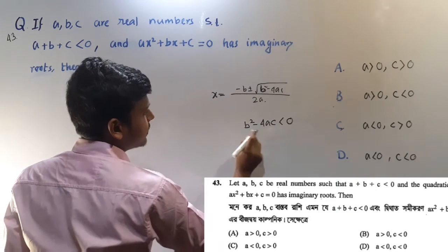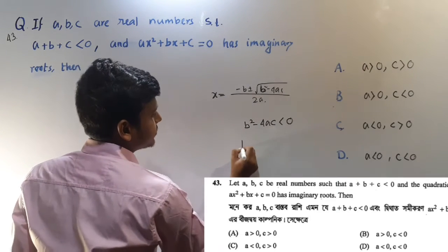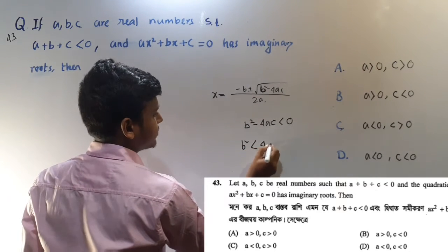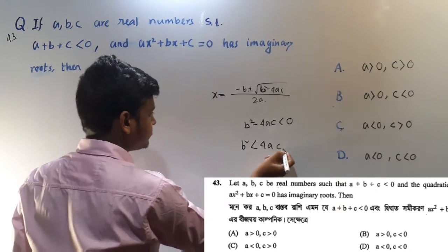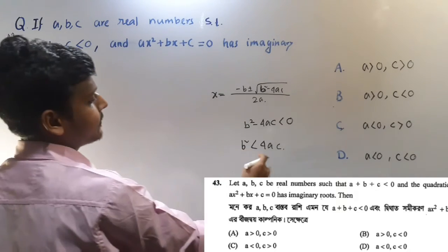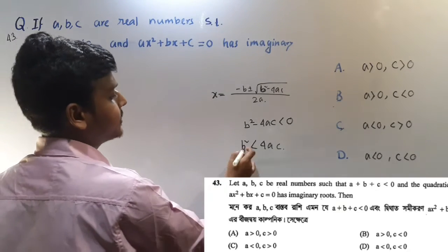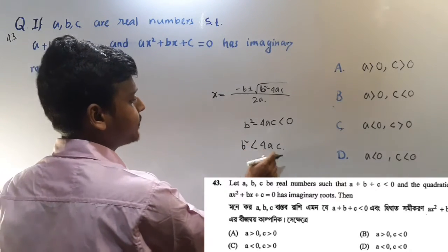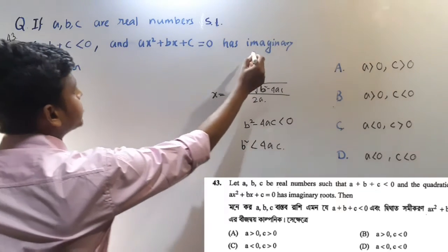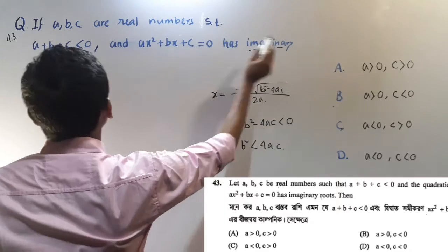That means B squared minus 4AC — if B squared is less than 4AC, then the roots are imaginary.